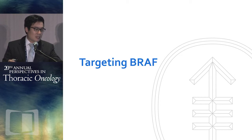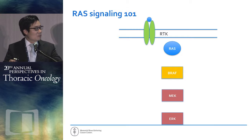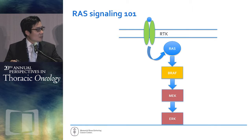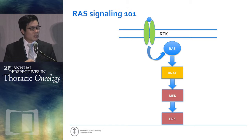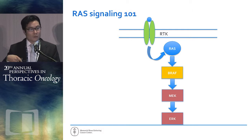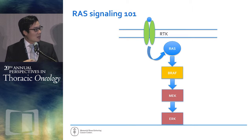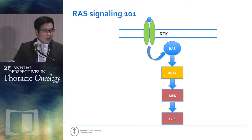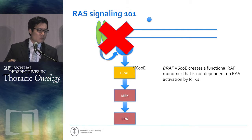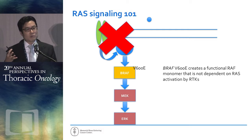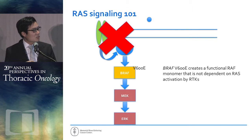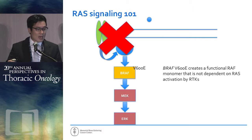We'll shift over to the RAS-RAF pathway, starting with the easiest one: BRAF mutant lung cancer. It begins with RTK ligand binding, dimerization, and phosphorylation, which recruits RAS to the membrane where guanine exchange factors activate it, leading to downstream signaling through BRAF and then the MAP kinase pathway. The V600E mutation creates a functional RAF monomer — RAF normally requires dimerization to function, but V600E creates a constitutively active monomer that is independent of RTK signaling or upstream RAS signaling.